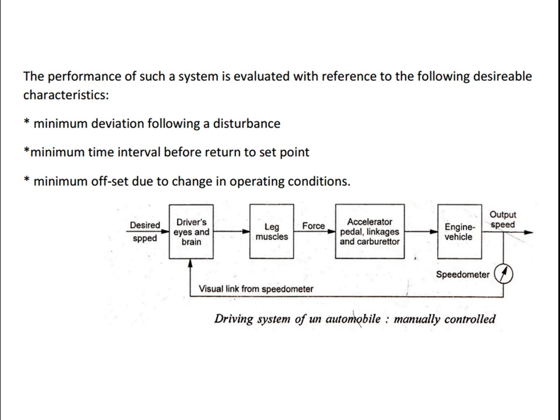The performance of closed loop systems is evaluated with reference to desirable characteristics: minimum deviation following a disturbance, minimum time interval before return to set point, and minimum offset due to change in operating position. I request students to use block diagrams to explain open and closed loop systems, as the syllabus clearly mentions explaining with block diagrams. This is the right practice for this topic, especially in examinations.